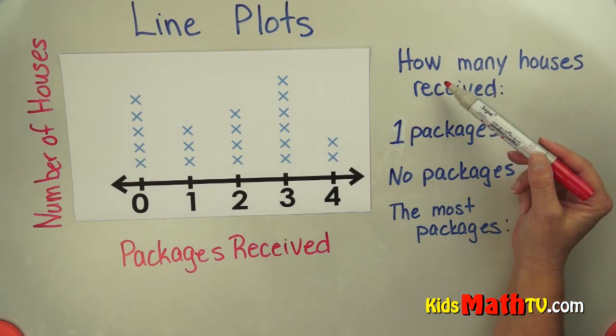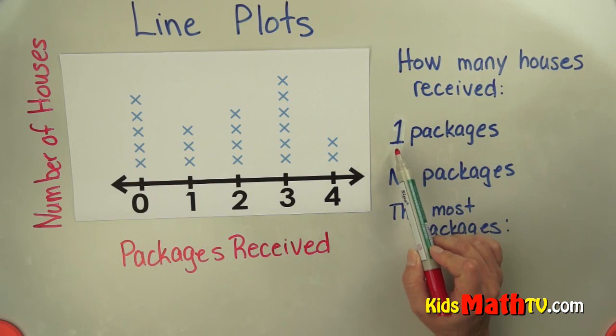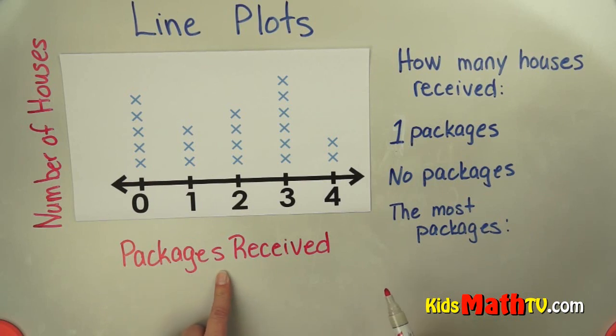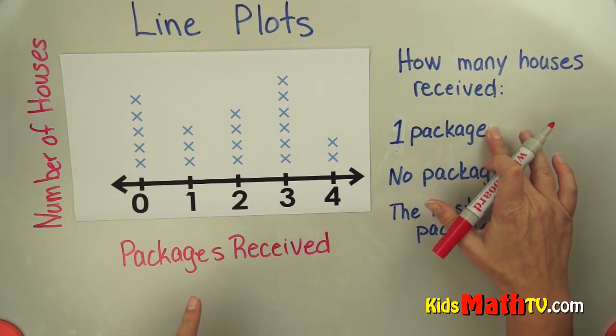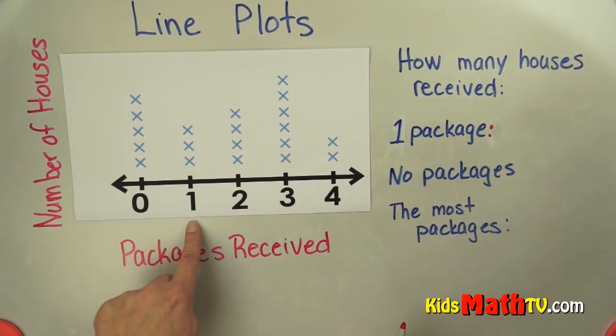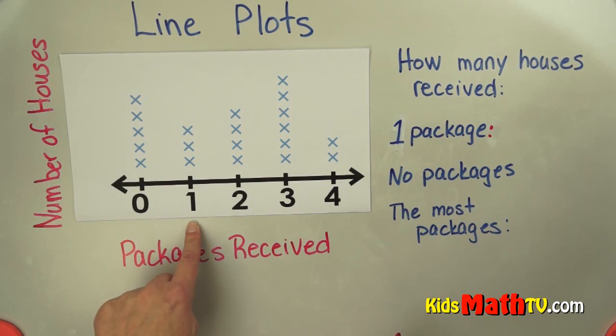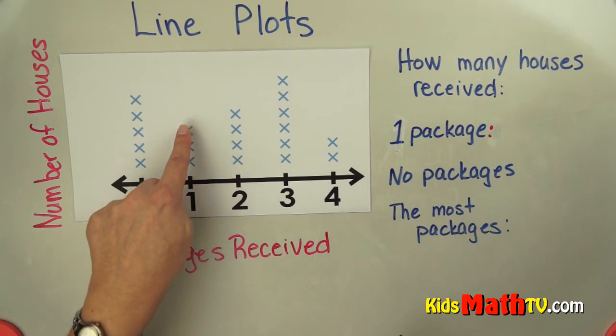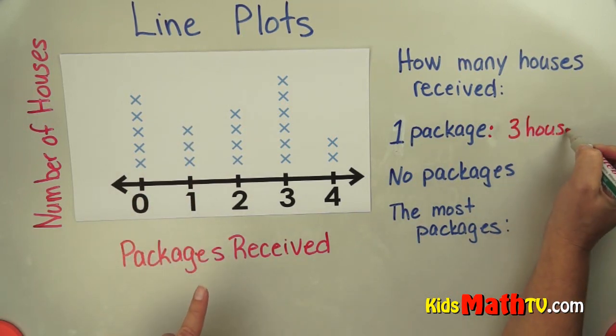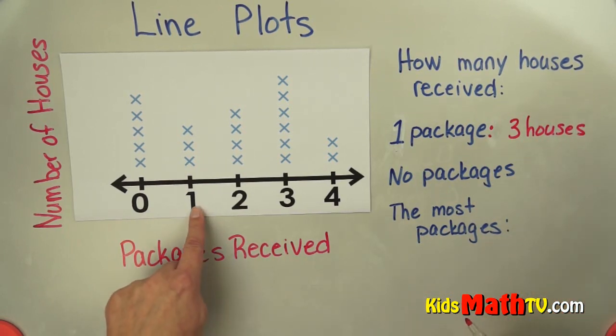If I read this, I want to know how many houses received just one package. So I go to where the packages are, that's along the bottom, and I find one. One package. So I go to one package and I count the number of plots on that spot on the line. One, two, three. So three houses received one package.